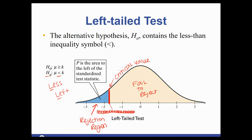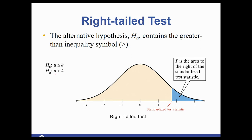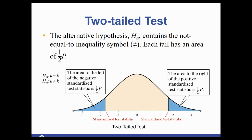If Hₐ is greater than, it goes with the right tail. A shortcut: look at the symbol closely — the arrow points to the side you shade, so you shade to the right. When Hₐ is not equal, it could be either smaller or bigger, so it is two tails — you shade both ends symmetrically.